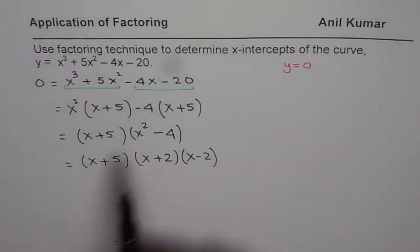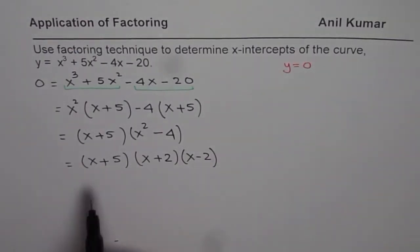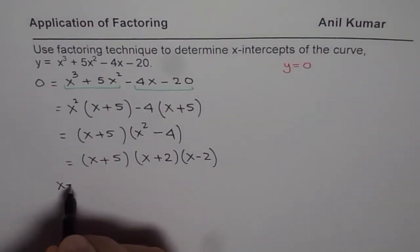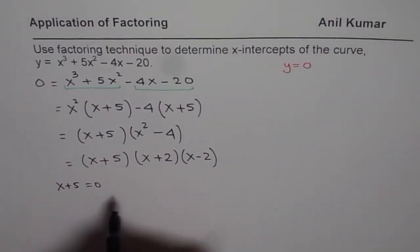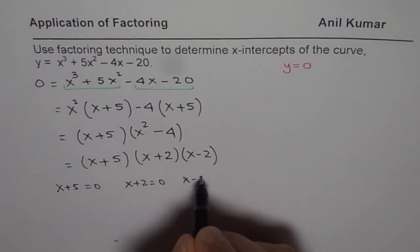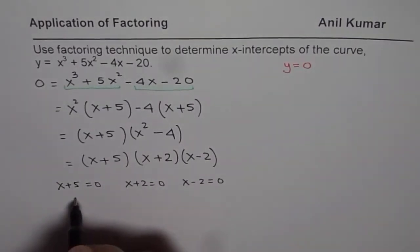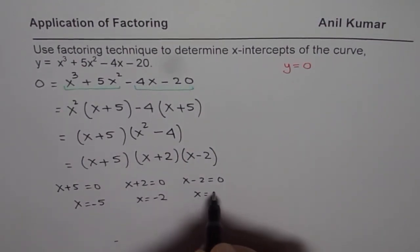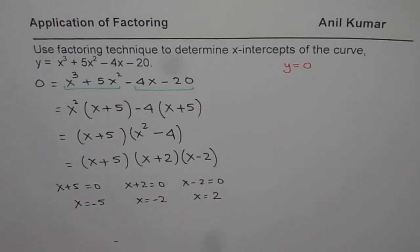The zeros or the x-intercepts in this case are when x + 5 = 0 or when x + 2 = 0 or when x - 2 = 0. That gives us x = -5, x = -2, and x = 2.